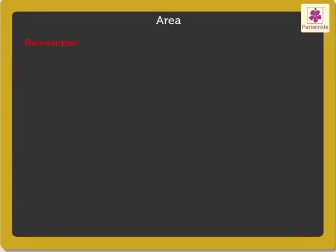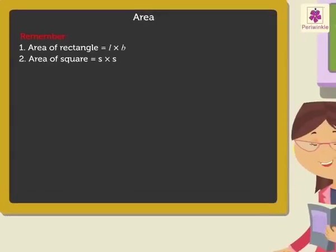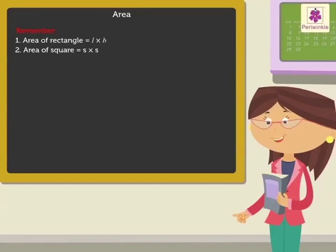Remember the formulas: one, area of a rectangle is equal to length into breadth; two, area of a square is equal to side into side. Kids, if you remember the formulas then finding the area will not be difficult.